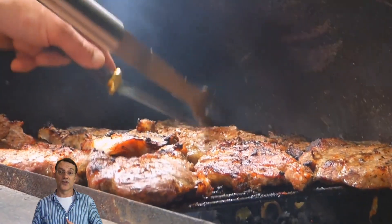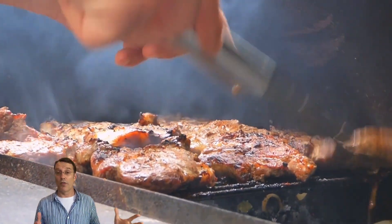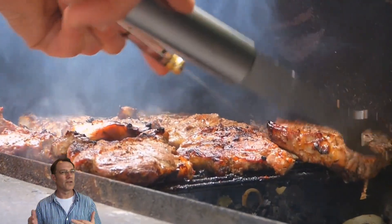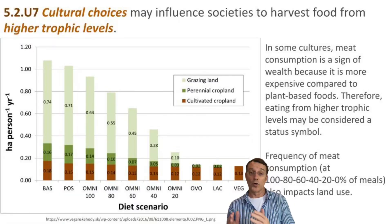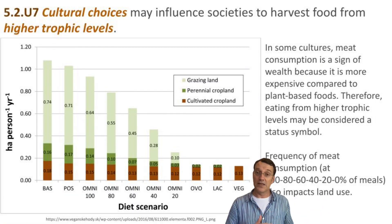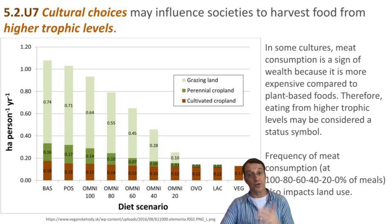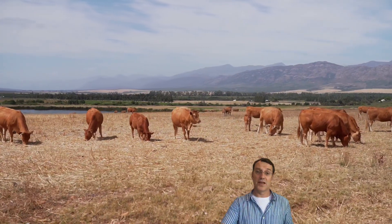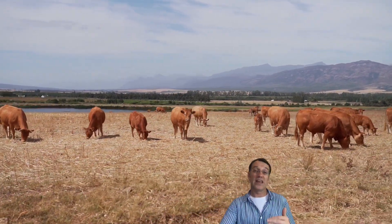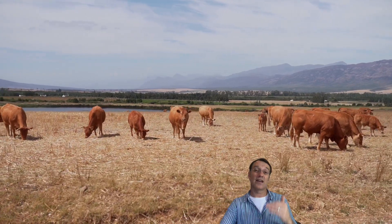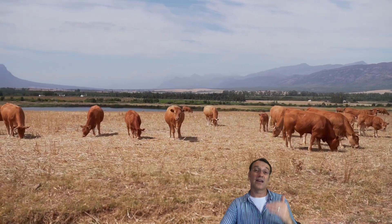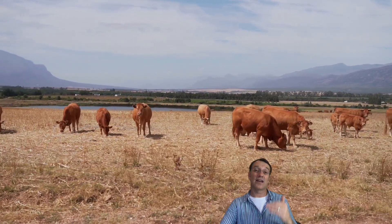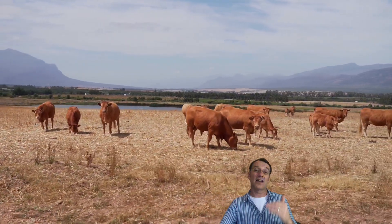In many cultures, eating meat is seen as a sign of wealth or status, but this cultural preference has a big environmental impact. The more often people eat meat, the more land is needed for farming. For example, if everyone ate meat at every meal, we'd need a lot more farmland than if people ate meat less frequently. This shows how our cultural food choices can have far-reaching consequences.